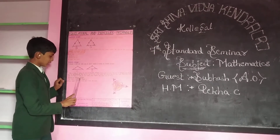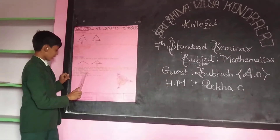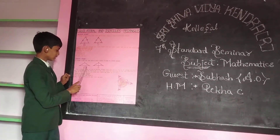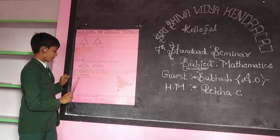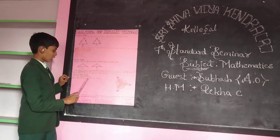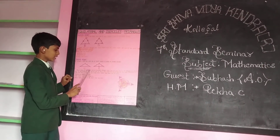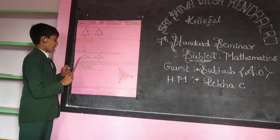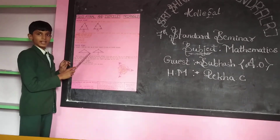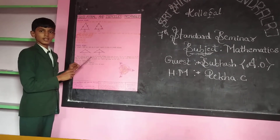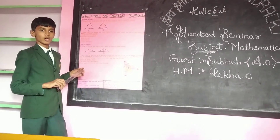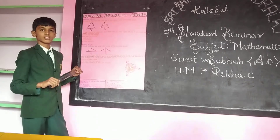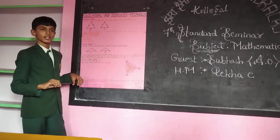So in an isosceles triangle, two sides have the same length, and the base angles opposite to the equal sides are equal — angle Y equals angle Z. These are all the properties of equilateral and isosceles triangles. Thank you all.